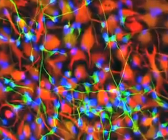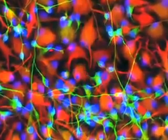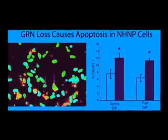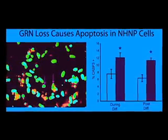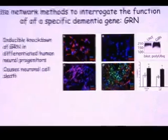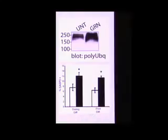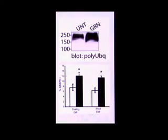First, we developed a cell culture system of neuronal stem cells to model FTD in cell culture, and we showed that these neurons undergo apoptosis with loss of progranulin. We further showed that there is an increase in polyubiquitination, which is extremely important because ubiquitinated inclusions are characteristic of frontotemporal dementia.